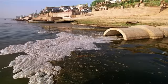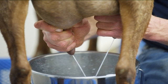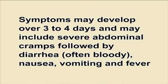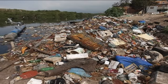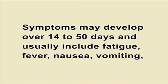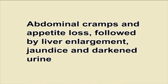Escherichia coli is the bacterium associated with hemorrhagic colitis. It may be contracted by drinking water containing raw sewage, or in raw or rare ground beef and unpasteurized milk. Symptoms may develop over 3–4 days and may include severe abdominal cramps followed by bloody diarrhea, nausea, vomiting and fever. Hepatitis A is a viral disease contracted when shellfish harvested from polluted water is eaten raw, or transmitted by human carriers who prepare and serve uncooked foods. Symptoms may develop over 14–50 days and usually include fatigue, fever, nausea, vomiting, abdominal cramps, appetite loss, liver enlargement, jaundice and darkened urine. Hepatitis A may cause liver damage and death.